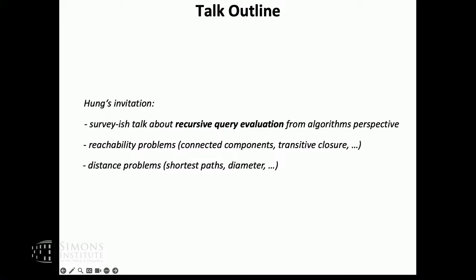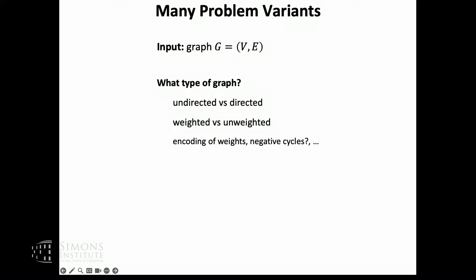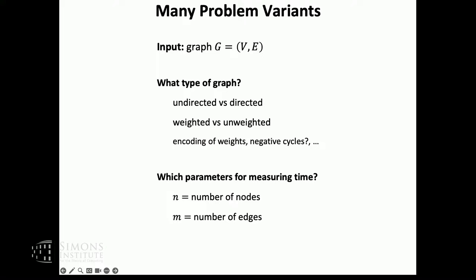My databases are graphs. Graphs come in lots of different variants: undirected, directed, weighted, unweighted, and so on. Sometimes there are more variants in the details, like how you encode weights. Whether there are negative cycles for your distance problems and so on. Typical parameters are the number of nodes n and the number of edges m, but there can be others, like the output size of a problem or the range of your weights.